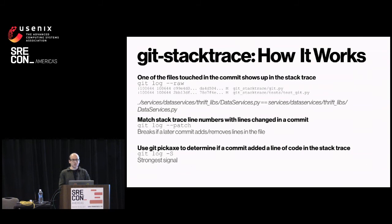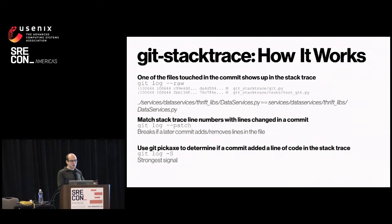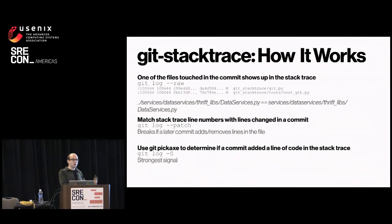The second thing we look at is whether a given line number in the stack trace actually matches a line in the commit. We use 'git log --patch', which generates a patch file you can parse automatically to say: this commit touched these four lines in this file, and the stack trace had an error on one of those lines. One problem is this breaks easily if a later commit adds a new line to the top of the file, shifting all line numbers by one.